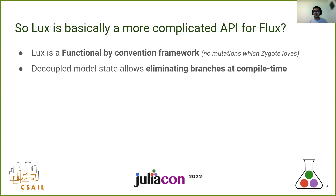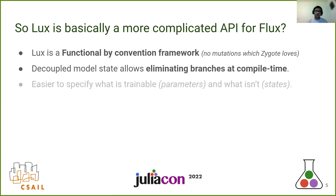For example, let's say you have a batch norm or dropout layer which operates under different conditions during training and inference. When we're compiling the code, we can essentially check if it's going to be run for training or for inference, and we can eliminate an entire chunk of code during compilation. Additionally, it makes you think really hard about what your parameters and states are, and by explicitly making you specify those, it provides a better mental model.